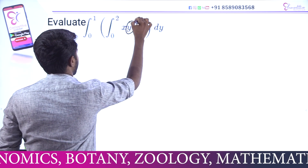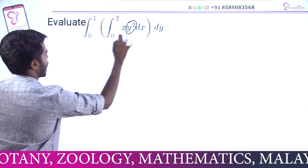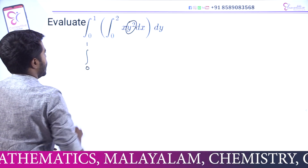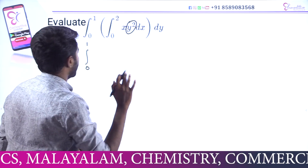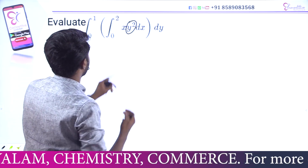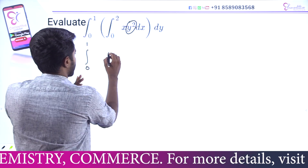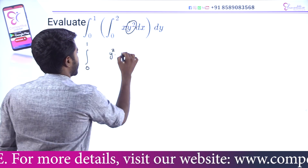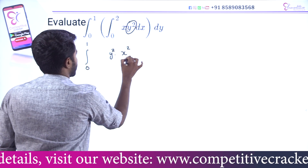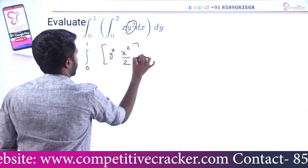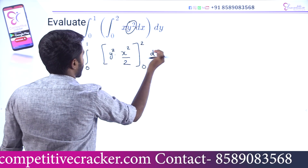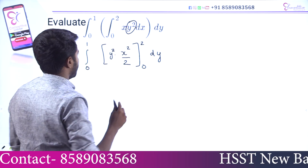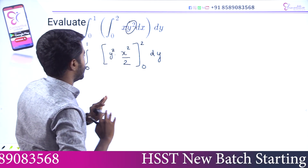Integral 0 to 1, integral 0 to 2. With respect to dx, we are treating y² as constant. We integrate x, applying upper limit and lower limit. If we have the function of dx, we can apply this method.